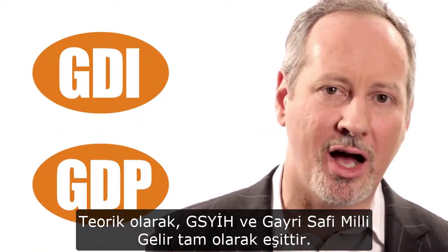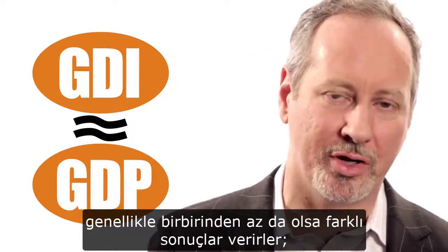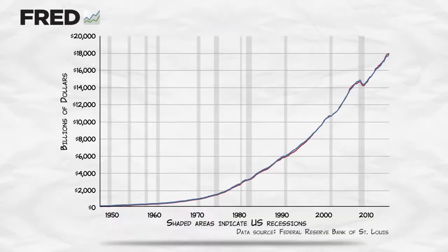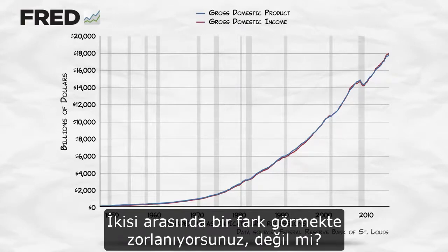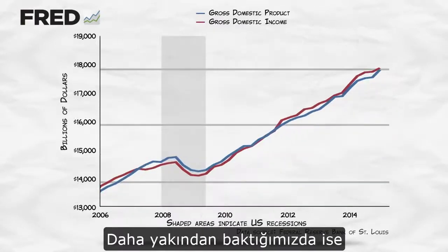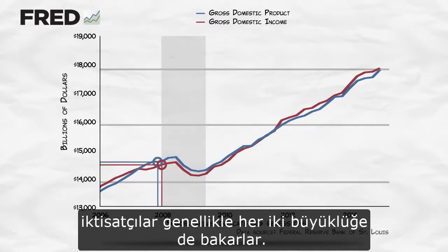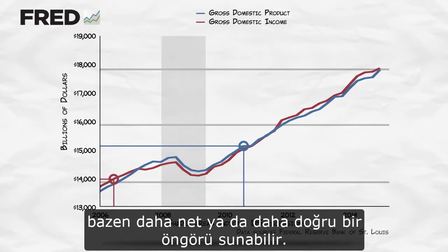Why the different name? In theory, GDP and GDI are exactly equal. But since they're calculated in very different ways, they usually give slightly different results, hence the different names. Let's take a look at the FRED database. Here we graph GDP and GDI — hard to see a difference, right? Let's zoom in a little bit. We can now see that they're not perfectly identical. And in a recession, economists often look at both figures, since one of them might sometimes give us an earlier or more accurate picture of the economic situation.